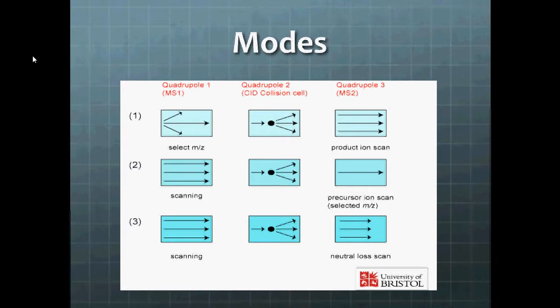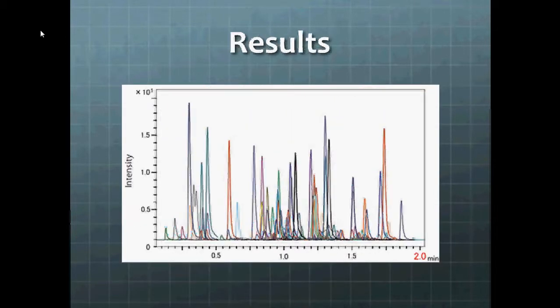Here's some typical data from a triple quadrupole mass spec. Now what this is is over a run, the total ion current was measured, but it was measured at specified mass to charge ratios. And what this is is the different specified mass to charge ratio chromatograms laid over each other. But all this data comes from just one run, and this is the kind of data and the kind of selectivity that you get from the triple quadrupole.